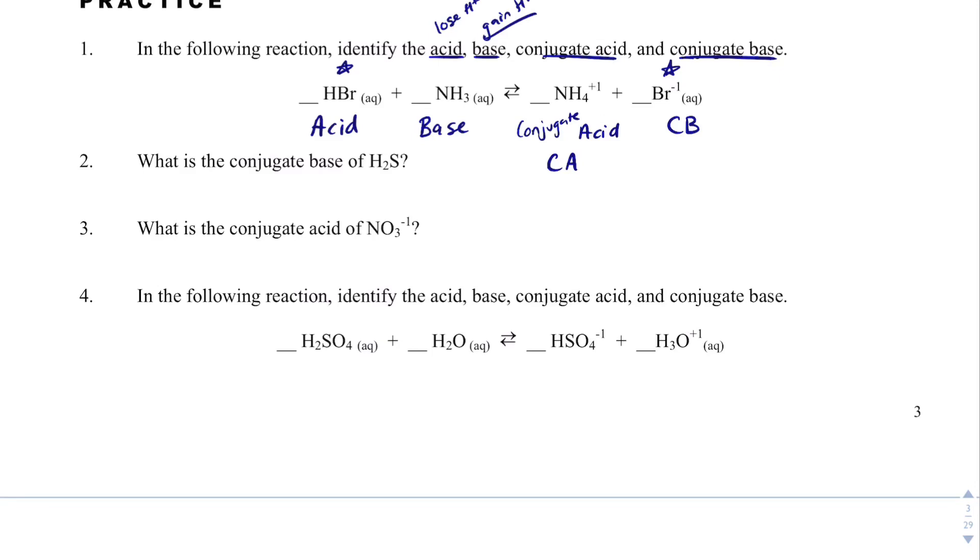In two, it says, what is the conjugate base of H2S? Well, let's look at what happened with the conjugate base above. We had the acid. And essentially, to turn it into the conjugate base, it needs to lose an H+. So, the way we do that is we just make this HS, but it's lost H+, so it was neutral, it's lost a plus, so now it'll be negative.